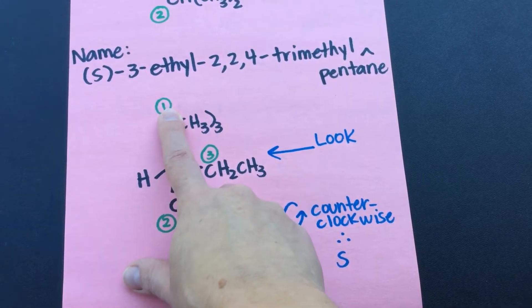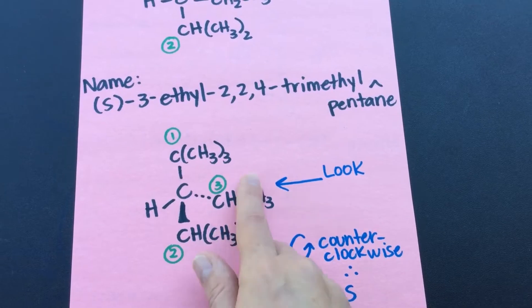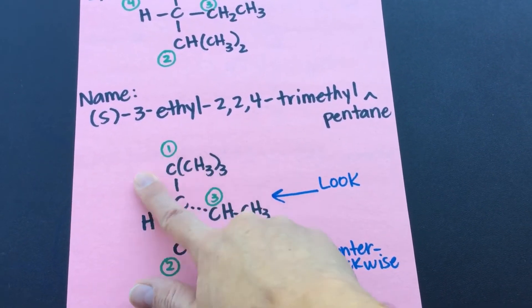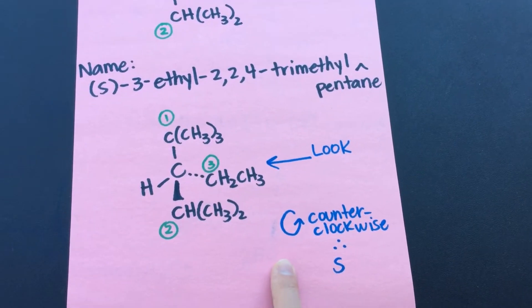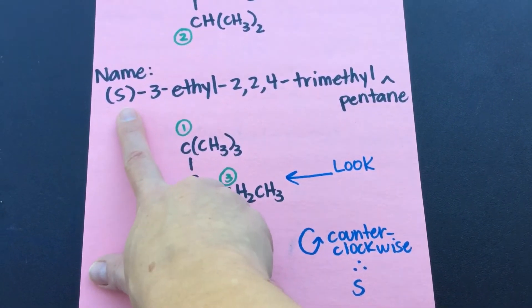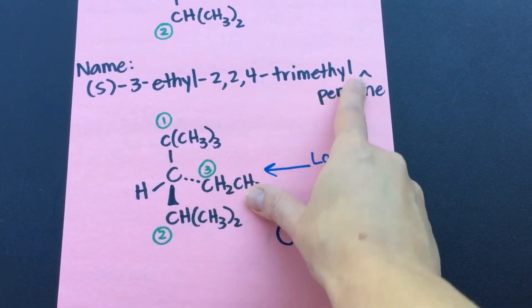Now we're going one, two, three. What direction is that? That's counterclockwise, right? That's not the way that my hands on the clock go. That's counterclockwise. That's why we have the S designation. So this is S-3-ethyl-2,2,4-trimethylpentane.